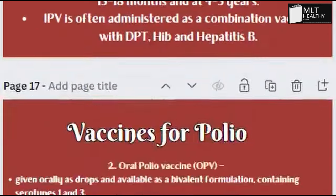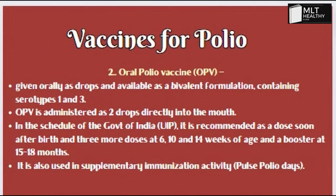If you choose the oral polio vaccine, you can use oral drops. This is a bivalent formulation with serotypes 1 and 3 present. After birth, the flu vaccine is given. This vaccine has the next 3 doses, with a booster at 15–18 months. Pulse polio days, immunization, and polio drops are also started.